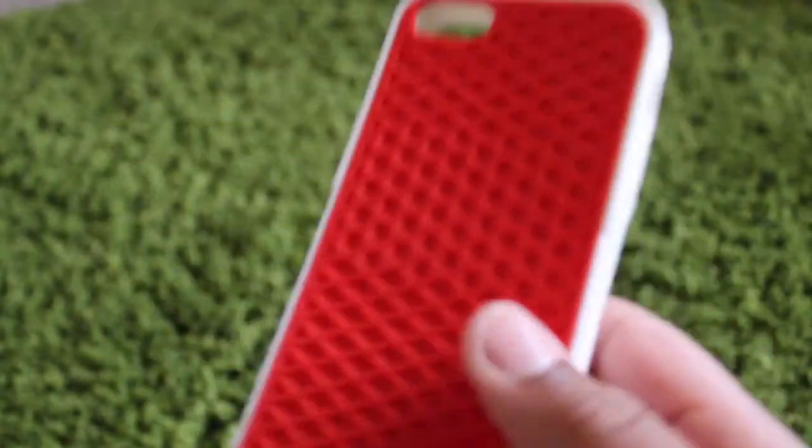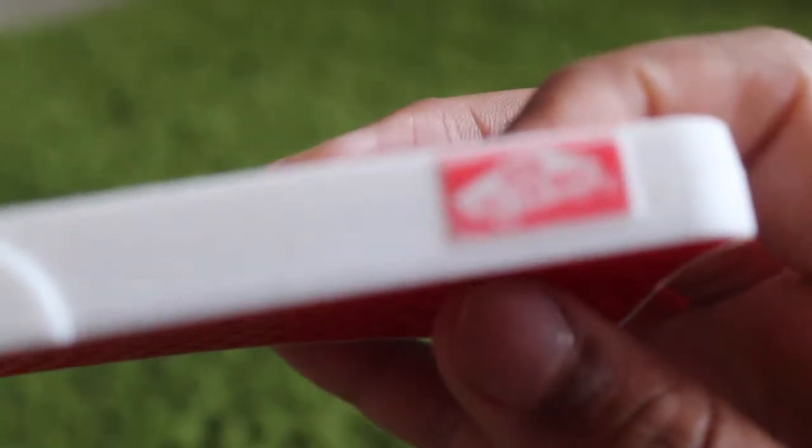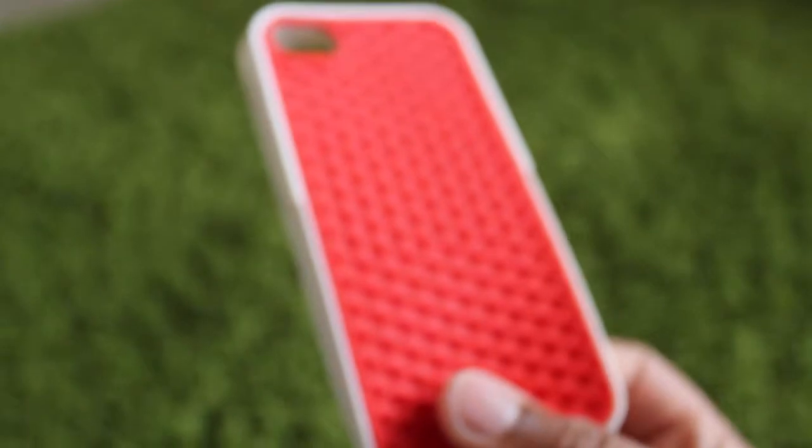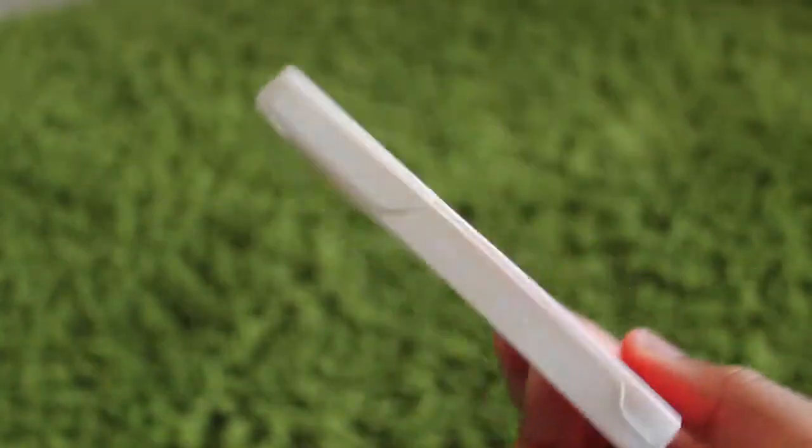And then I have this Vans waffle cone case and it says Vans off the wall. I don't know if you guys can see that. You probably can't see it, but it says Vans off the wall. And I got this off of Amazon as well. This is a really good purchase. Everyone's like, oh, where'd you get that? That's super cool. And I was like, Amazon.